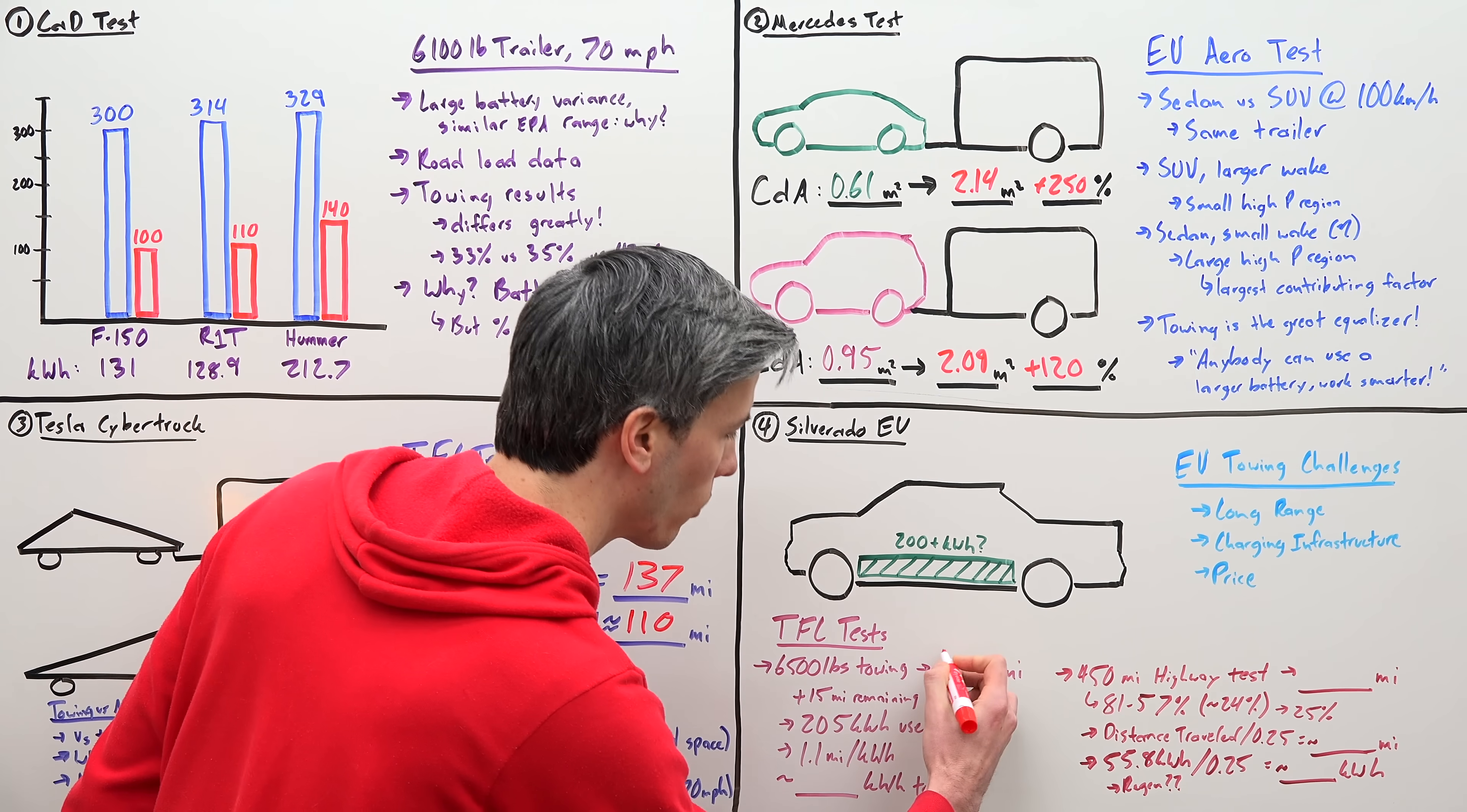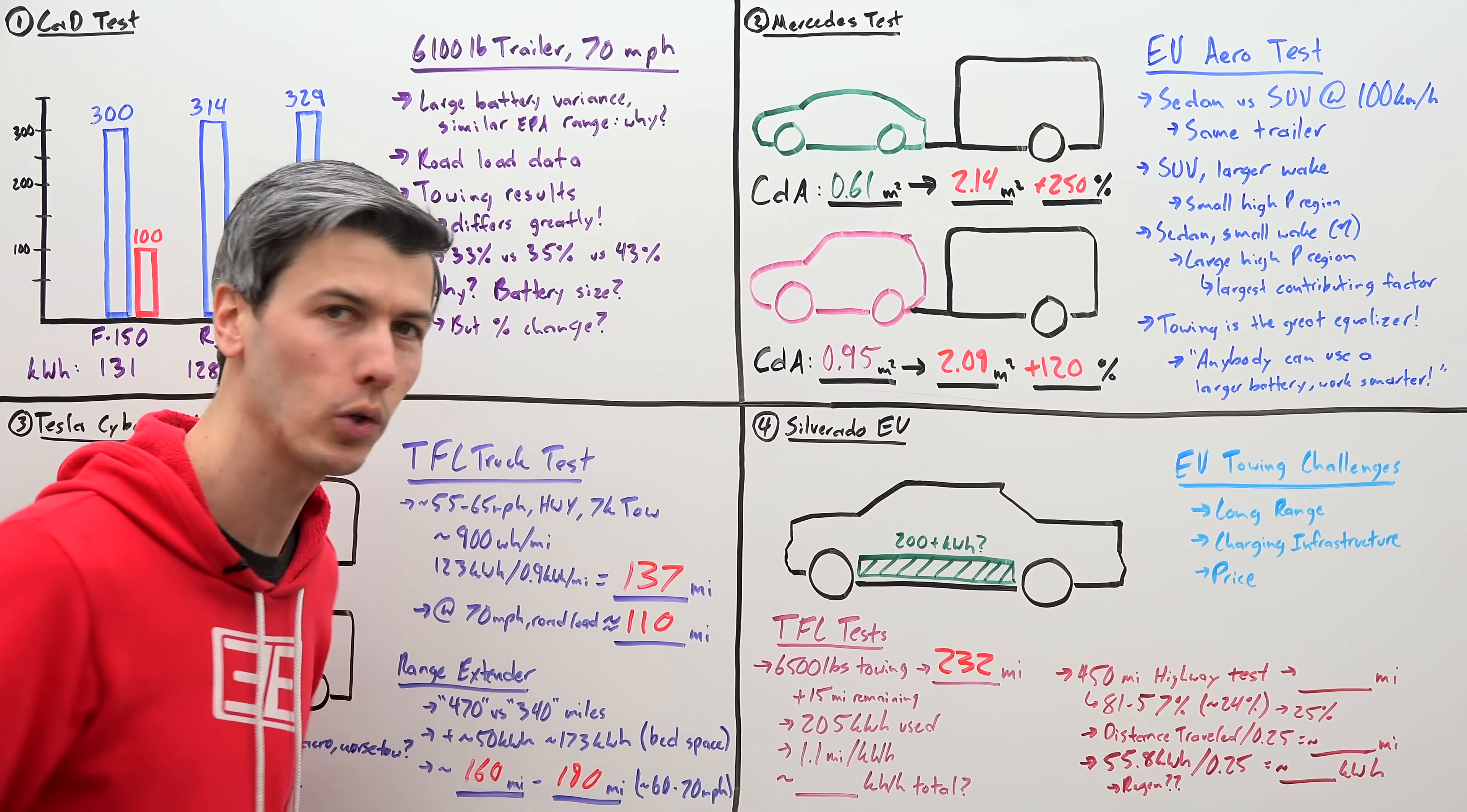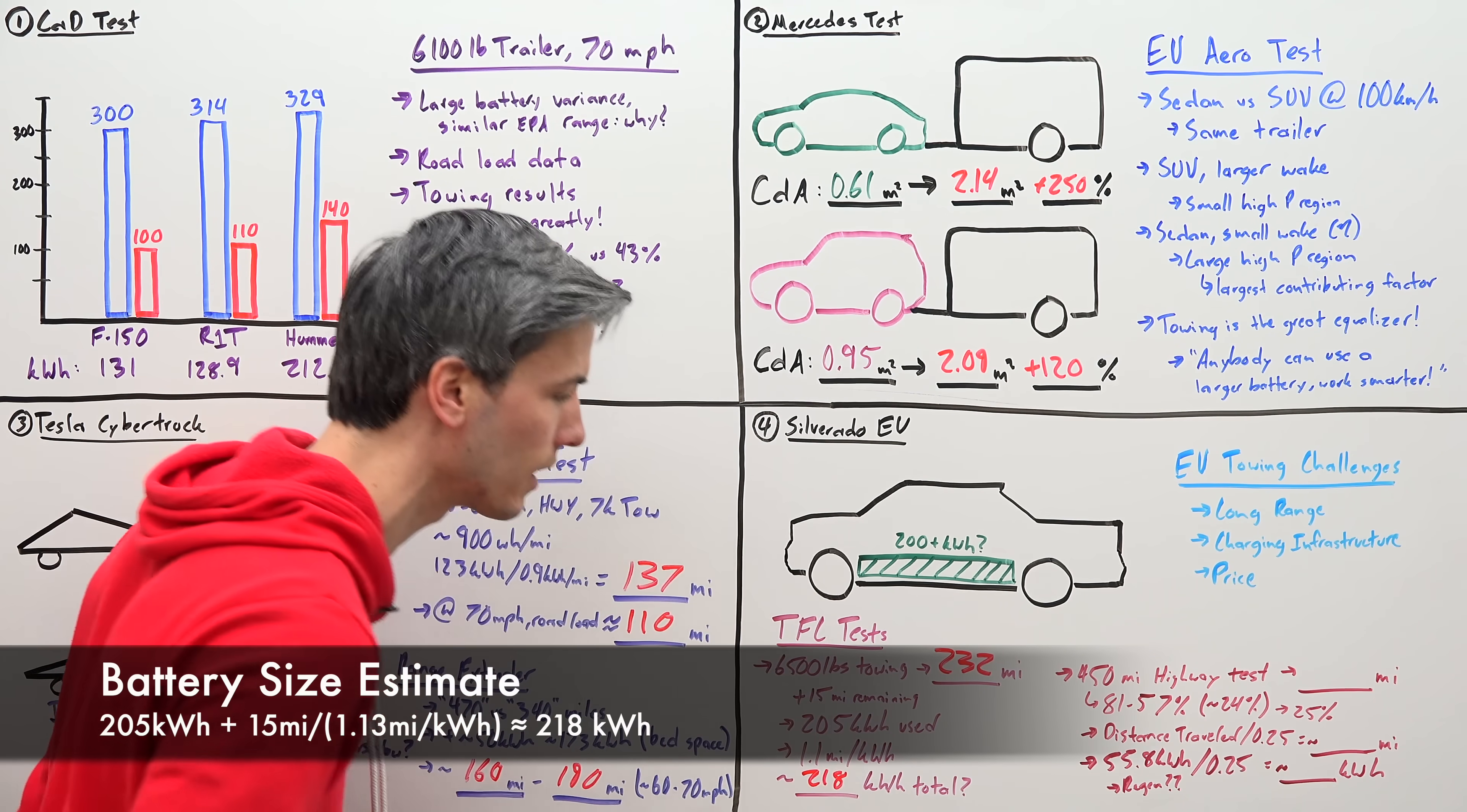And the result is very impressive. They were able to travel 232 miles while towing a 6,500 pound trailer, and they still had 15 miles of range remaining as indicated by the onboard computer. They used a total of 205 kilowatt hours with an average efficiency of 1.1 miles per kilowatt hour, which would give you, considering the extra battery remaining, a battery size of about 218 kilowatt hours.